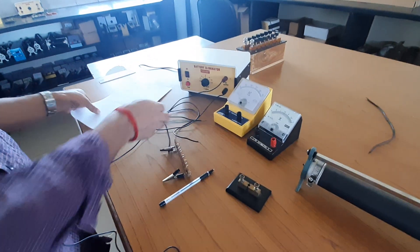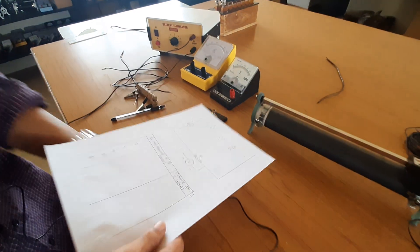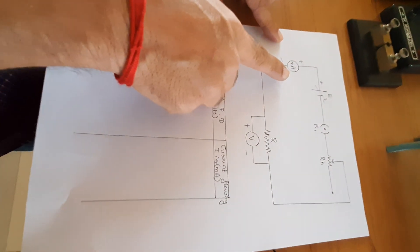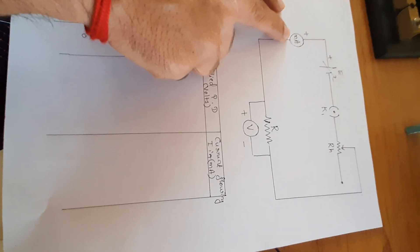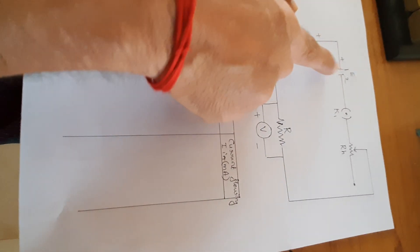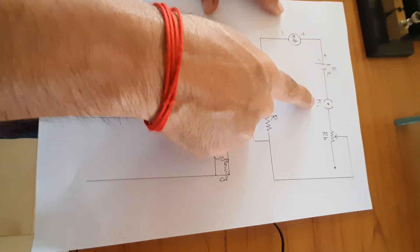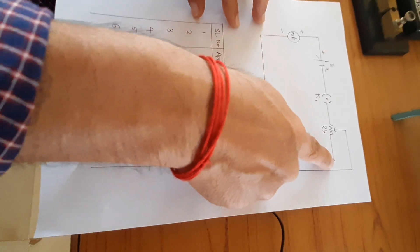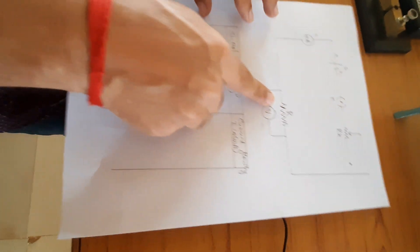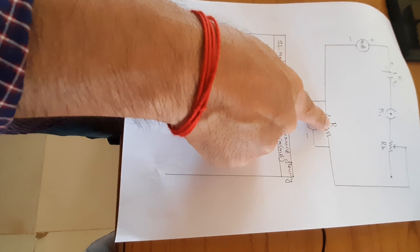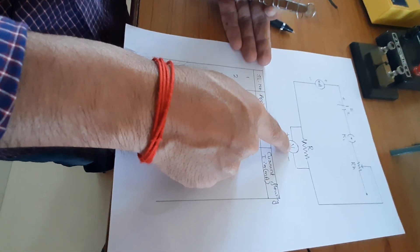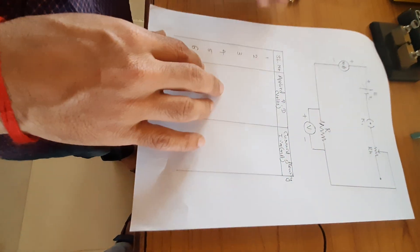Let us start to do the circuit setup now. This is the circuit setup you need to use. Here you can see the milliammeter with positive and negative terminals, the battery eliminator, the key, the rheostat with its lower and upper terminals, and the given wire of resistance R that you need to find. The voltmeter is also part of this circuit.